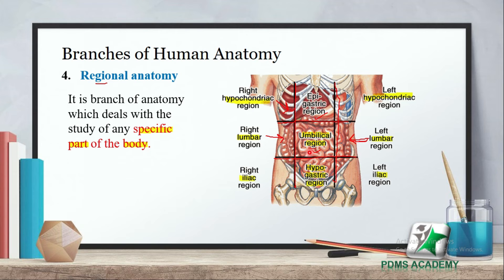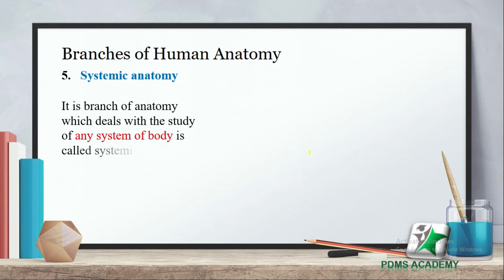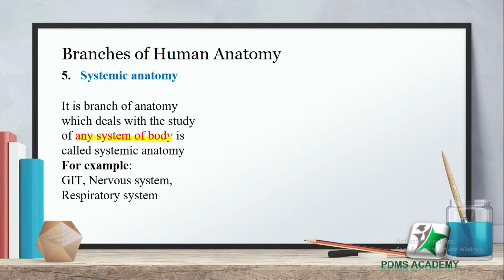The next branch is systemic anatomy. It is a branch of anatomy which deals with any system of the body. Our body has many systems, for example the gastrointestinal tract (GIT), digestive system, nervous system, respiratory system, and urinary system.